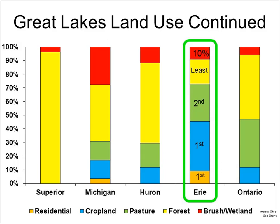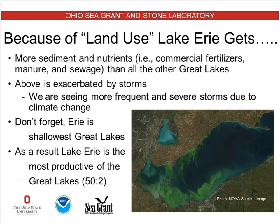The red bar represents wetlands. Lake Michigan and Lake Huron both have more wetlands than Lake Erie. We only have about 10% of historic wetlands remaining — about 90% have been converted to some other land use. This means Lake Erie gets more sediment and nutrients than all the other Great Lakes. When I say nutrients, I'm referring to commercial fertilizers and manure because of the heavy agricultural use in its watershed, but also sewage because of the heavy population within the watershed.